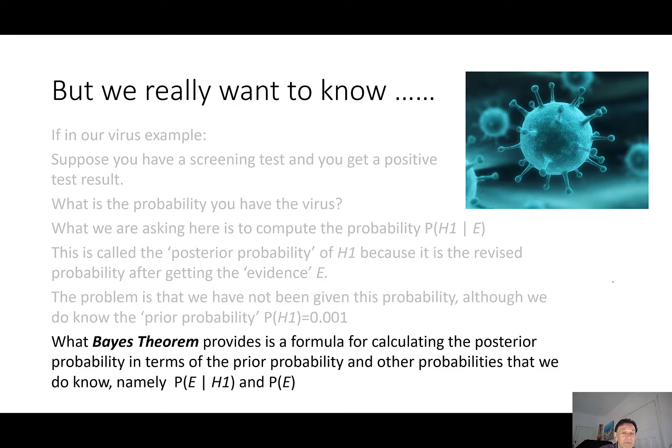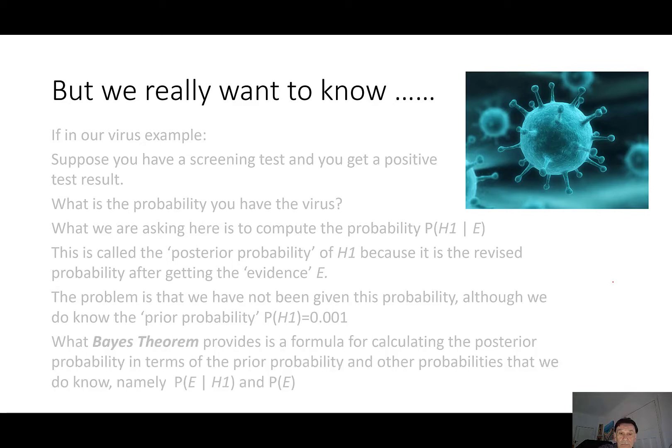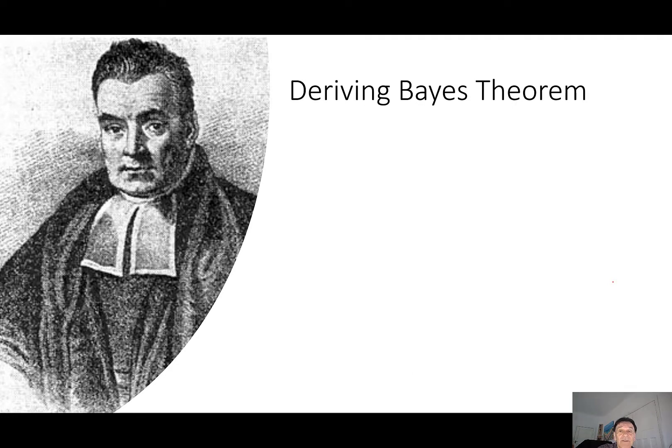Now, the problem is that we've not been given this probability, although we do know the prior probability of H1, which is 0.001. That's the population probability, the probability that a randomly selected person population has the virus. What Bayes' theorem provides is a formula for calculating the posterior probability in terms of the prior probability, as well as other probabilities that we do know, like the probability of a positive test result given the person has a virus, and as you've just seen, the marginal probability of the evidence.